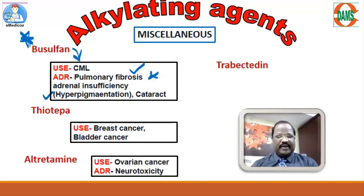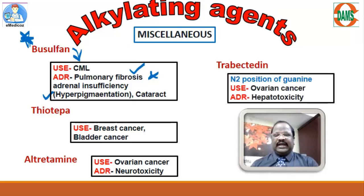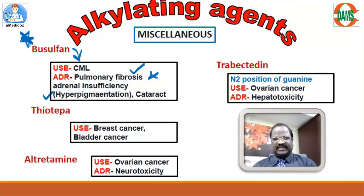Thiotepa is useful for breast cancer and bladder cancer. Altretamine is useful for ovarian cancer and may cause neurotoxicity as an important adverse effect. Trabectedin acts on the N2 position of guanine residue — unlike most alkylating agents which act on N7. Trabectedin is useful for ovarian cancer and causes hepatotoxicity as an adverse effect.